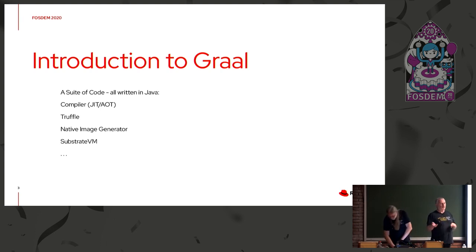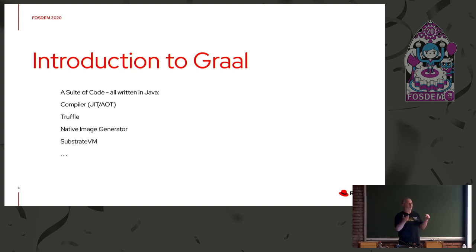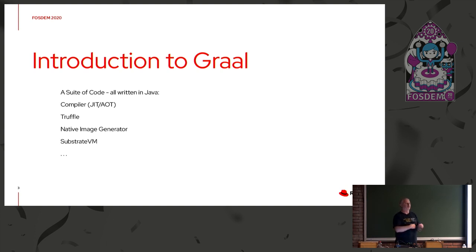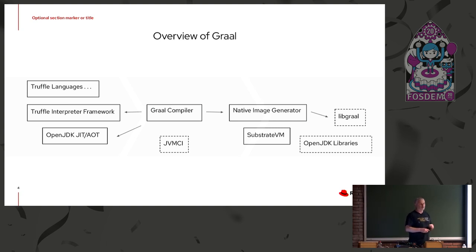It can function as a JIT compiler or as an ahead-of-time compiler. There's an interpreter framework called Truffle, which can be used to provide support for a whole lot of interpreted languages that the compiler can then optimize by compiling. There's a native image generator that can take a Java program, find a closed world of all the code called from the program, and generate a small executable that can run independent from OpenJDK, because it's got its own little JVM inside called Substrate.